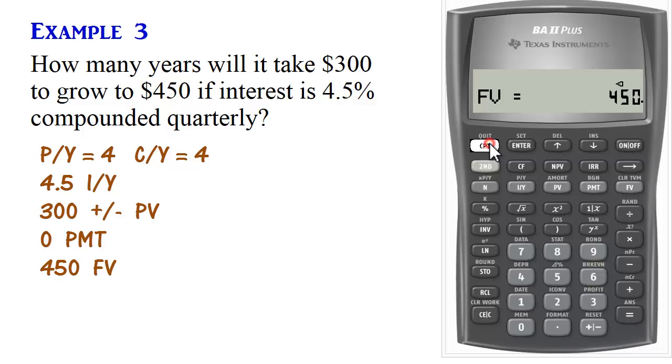And then we compute N. So N is 36.24 quarters. So it takes 36.24 quarters to grow to $450 if interest rate is 4.5% compounded quarterly.